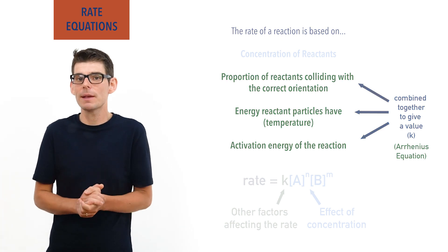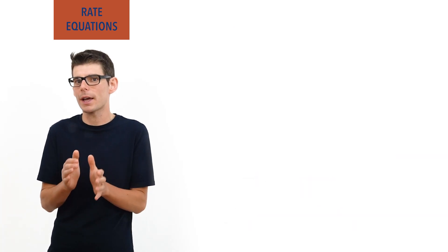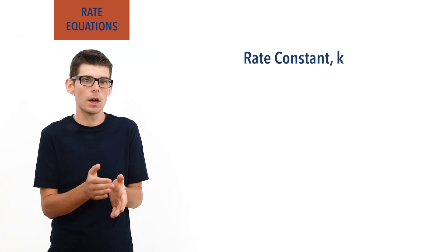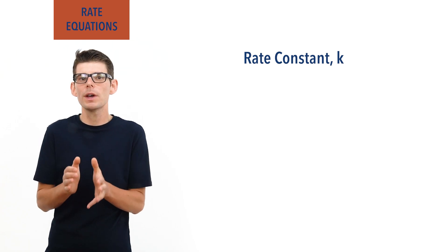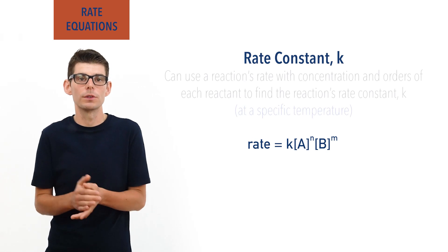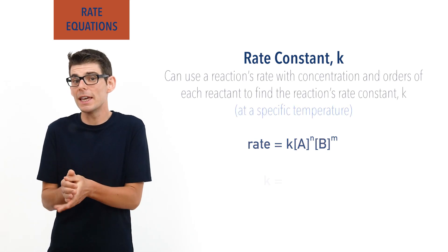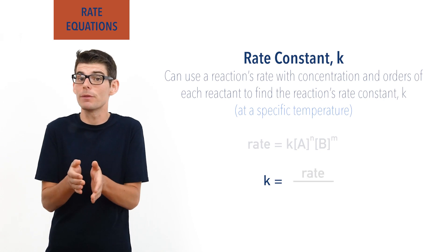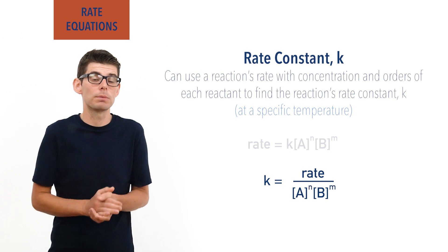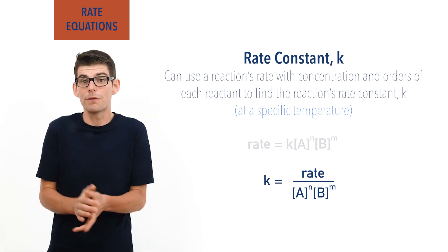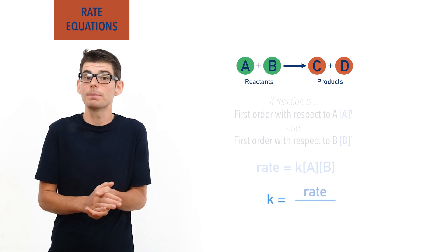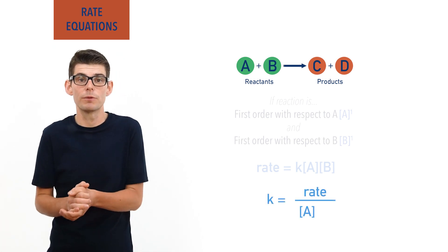If, at a specific temperature, the rate of a reaction is known, and the concentrations and orders with respect to all reactants are also known, a rate equation for the reaction can be constructed and rearranged to find the rate constant K. Rate constant K equals rate divided by the concentrations of all reactants raised to the power of their orders, multiplied by each other. For the example we looked at earlier, rate constant K equals rate divided by the concentration of A times the concentration of B.